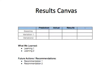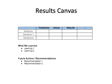This is just an example of a results canvas. You've got what you predicted, the actual results, what the actual was, plus any variations that you can add. There's the baseline and variations. You can also say what you learned, and you can put in any future actions and recommendations into this type of canvas.